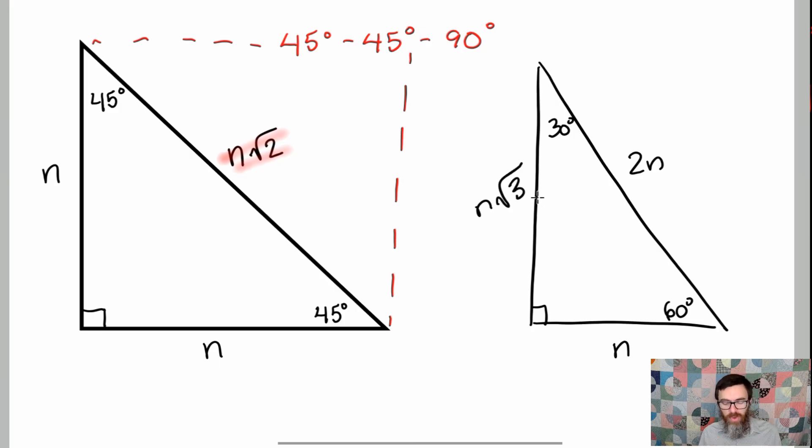So since you have a 45-45-90 degree triangle you have an isosceles triangle, which is why we see here with n and n being the same because those two sides are going to be congruent.